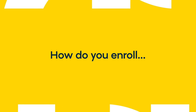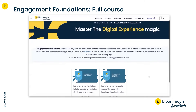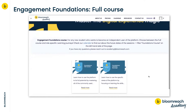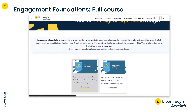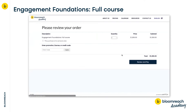So how do you enroll in the Engagement Foundations full course? You can find the purchase button in the upper right hand corner of this page. Simply click on it and then apply the promo code that you've been granted. If you don't have a code but would love to participate in the training, please review our pricing page and reach out to your account manager or contact academy at bloomreach.com.